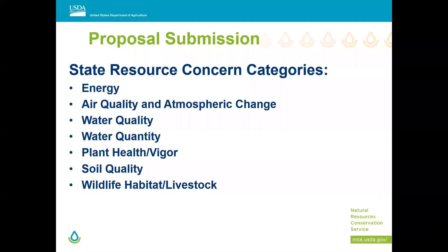These are the state priority resource concerns we've selected for Oregon. As you do your descriptions and project proposals, please note this is what we're looking for: energy, air quality and atmospheric change — which translates to greenhouse gases — water quality, water quantity, plant health, soil quality, wildlife habitat, and livestock. We like to keep it broad, but those are the key points in Oregon we're looking for in these proposals.